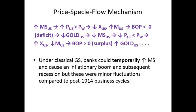So that's the price specie flow mechanism. Under the classical gold standard, because we didn't have 100% gold backing of notes and deposits, banks could temporarily increase the money supply, causing a temporary inflationary boom and deficits. Eventually, when the banks were forced by the outflow of gold — or in Britain's case, the Bank of England — to stop increasing the money supply, there would be a recession. But these booms and busts were very minor compared to what occurred after 1914, after we left the gold standard.